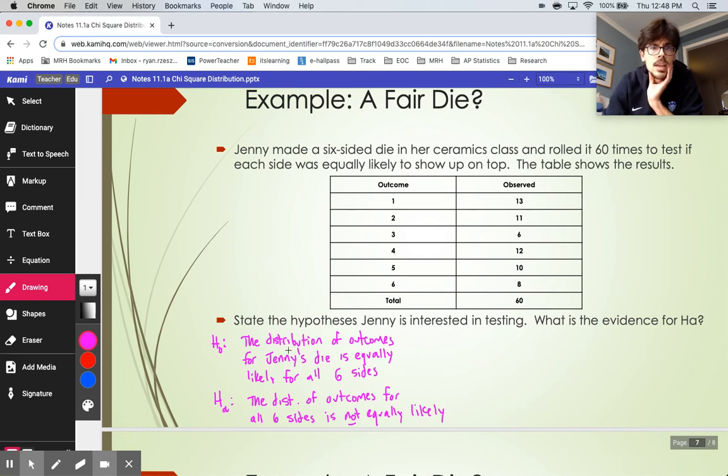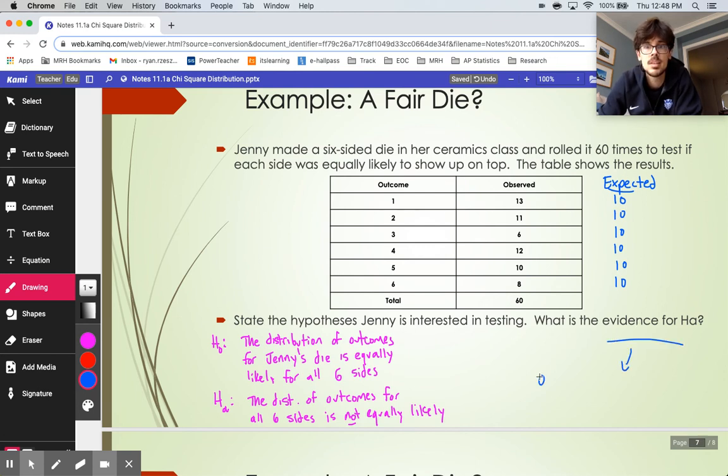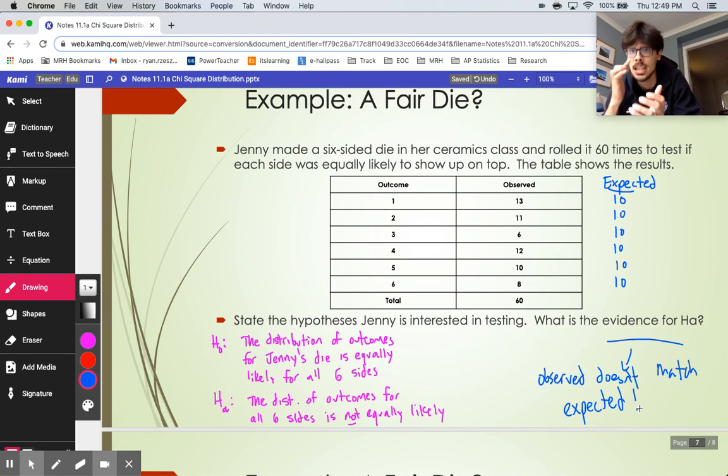It asks, what's the evidence for HA? Why do we think HA might be true? That's going to involve those expected counts that we would need to calculate. Now on our M&M problem, we were supposed to get different things for each one. So there was a little bit of work. This one, we're hoping her die is equally likely for each side. Out of 60 possibilities, you would take a sixth for each of these. We would expect to see 10 for every single one this time. Now what's the evidence for HA? The observed counts don't match the expected counts. We do have some discrepancies here. We'll just get a sense for are these discrepancies big enough?